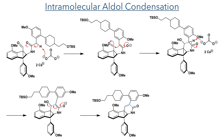With the aldehyde installed, they could then proceed to an intramolecular aldol condensation to form a new ring. Cesium carbonate was used as a base, which deprotonated the alpha position of the amide to generate the enolate nucleophile, which then attacked the electrophilic aldehyde. The resulting alcohol was then eliminated in an E1CB fashion, generating the desired double bond.